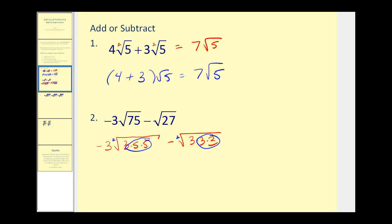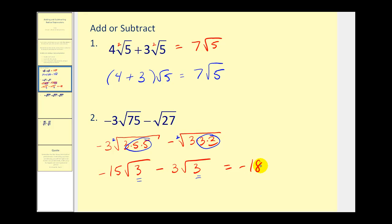There's a perfect square factor, and there's a perfect square factor. So if we already have a three here, and this will simplify to five, three times five would be fifteen — or negative fifteen — square root three, minus: here we have the square root of three squared, that would be three, and then we're left with square root three. So now we do have like radicands and we can combine these terms by subtracting the coefficients. Negative fifteen minus three would be negative eighteen square root three. It's very similar to combining like terms, except we do have to simplify our radicals first.